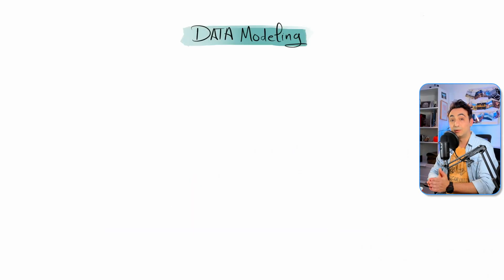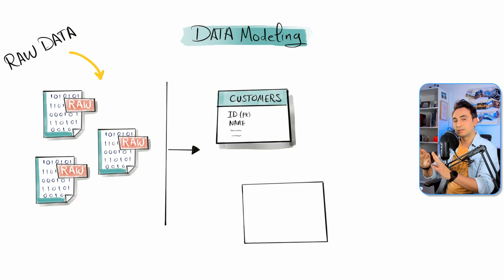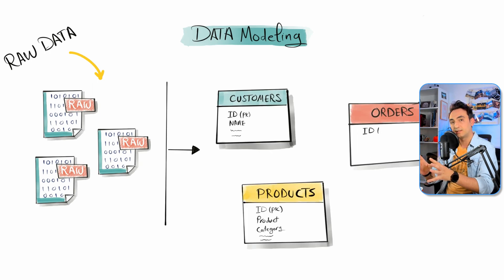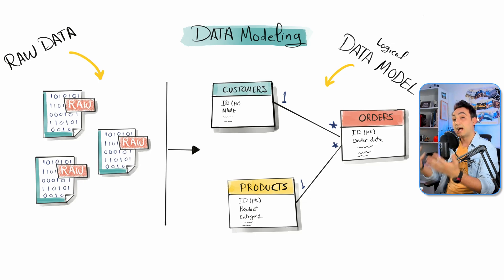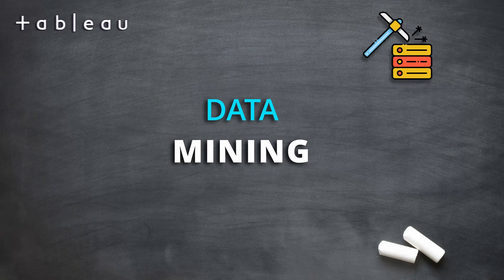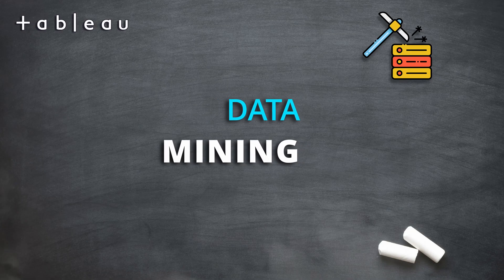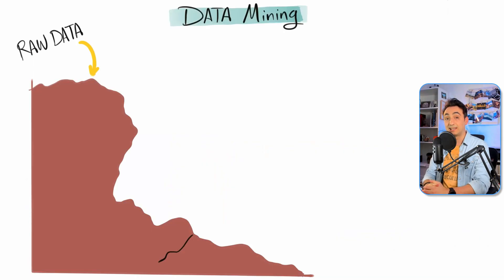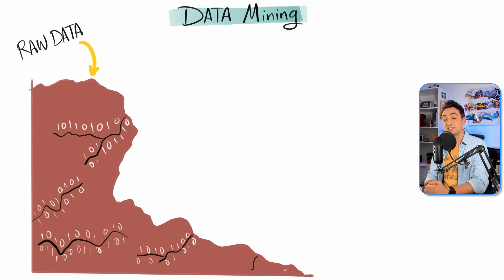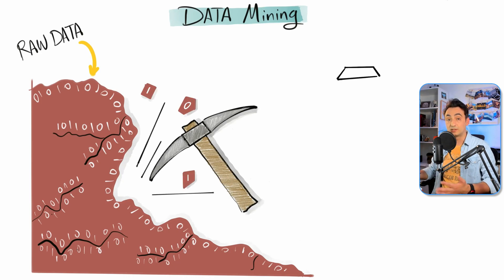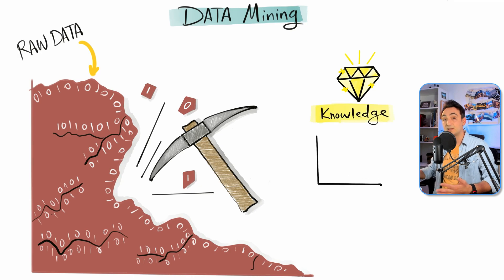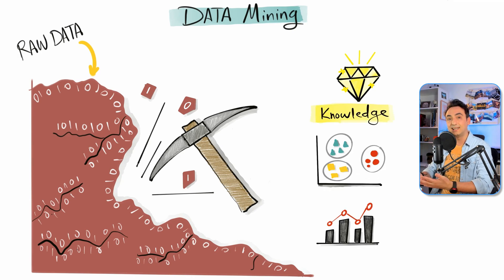Another thing we can do is data modeling. Data modeling is the process of connecting the dots — we put all the data into entities and objects, then describe the relationships between those entities to help us and our programs understand how the data is related. We can also do data mining. Data mining is the process of analyzing massive amounts of raw data to discover knowledge and business intelligence — like patterns and trends — to solve problems and mitigate risks.